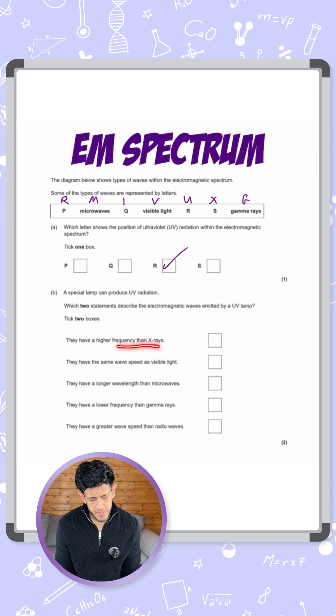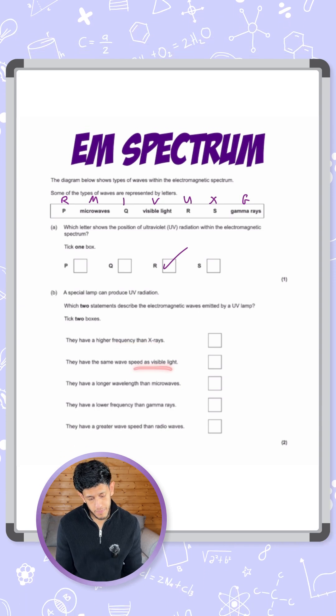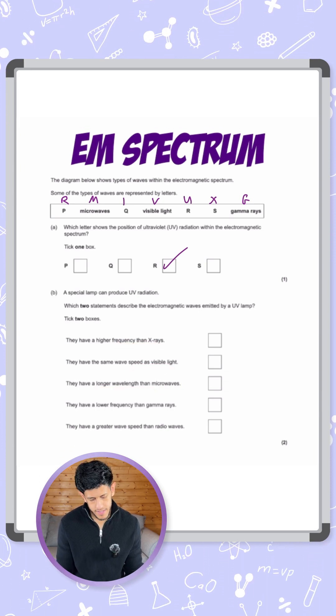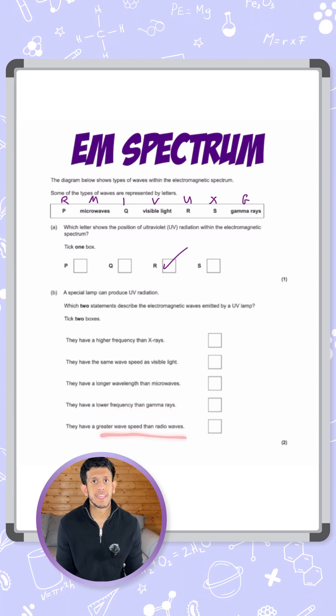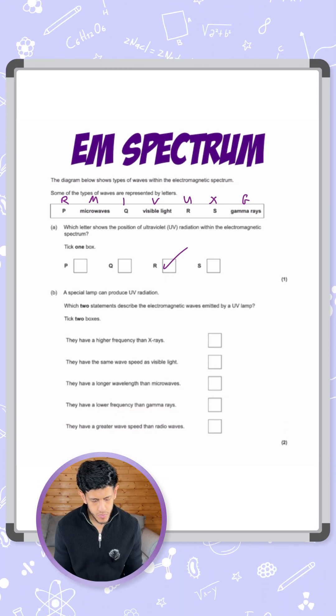It says they have a higher frequency than x-rays. They have the same wave speed as visible light. They have a longer wavelength than microwaves. They have a lower frequency than gamma rays, or they have a greater wave speed than radio waves. Let's see which ones it can and can't be.